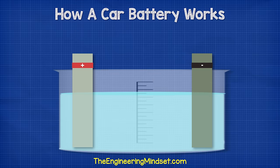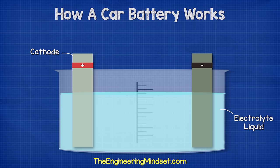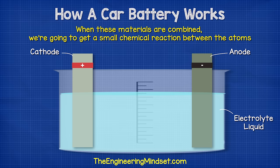In this cell we have the electrolyte liquid, which is one-third sulfuric acid and two-thirds water. We have the positive electrode — the cathode — made from lead oxide. We then have the negative terminal — the anode — made from pure lead.